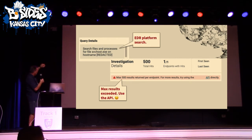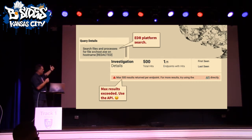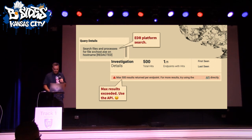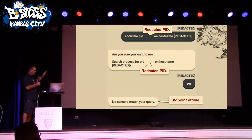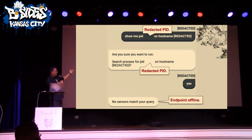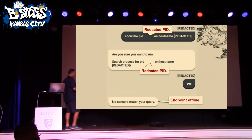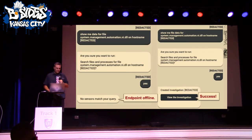We searched for the file svchost.exe on the hostname, but it came back saying it got more than 500 results — go use the API if you want more. I don't have time to master the API, so I keep using the natural language parser. I try querying by the specific process ID, and it comes back saying 'endpoint's offline' — or 'no sensors match your query,' which is ambiguous. Does that mean I'm writing my query incorrectly, or does the endpoint's offline?